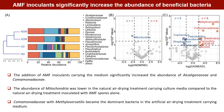We analyzed the species abundance of endophytic bacterial communities in maize from different treatments and showed that the addition of AMF inoculants carrying the medium significantly increased the abundance of Alkaligenaceae and Comamonadaceae. Volcano plot analyses showed the abundance of mitochondria was lower in the natural air-drying treatment carrying culture media compared to natural air-drying with AMF spores alone. However, Comamonadaceae with Methyloversatilis became the dominant bacteria in the artificial air-drying treatment carrying medium.